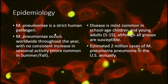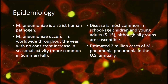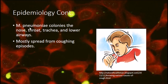For epidemiology, this bacteria is a strict human pathogen — it is not opportunistic and not a commensal. It occurs worldwide throughout the year with no consistent seasonal increase, though there is a short spike common in summer and fall. Disease is most common in school-aged children and young adults, ages 5 to 15, and there are an estimated 2 million cases of mycoplasma pneumonia in the U.S. annually.